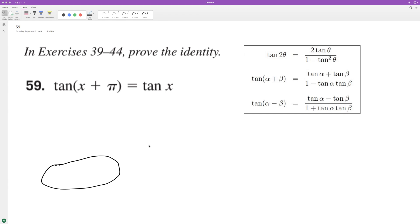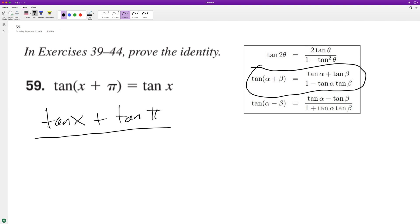We're going to use this addition property right there. So starting off here, we'll start with tangent of x plus tangent of pi over one minus, and this becomes tangent of x tangent of pi.